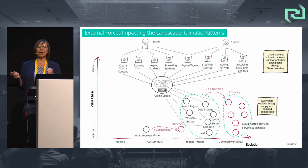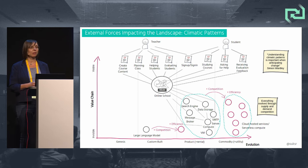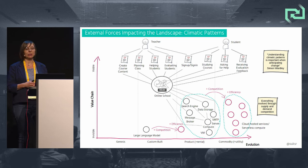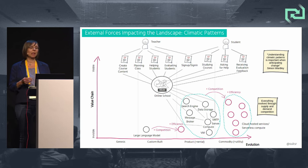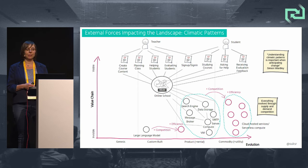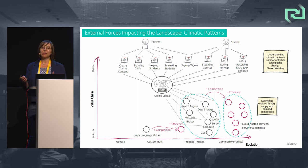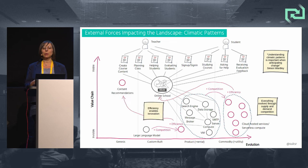One pattern is that the landscape is never static but very dynamic — everything evolves from left to right through the forces of supply, demand, and competition. For example, cloud-hosted services reflect this climatic pattern: what was decades ago non-existent evolved through Genesis and Custom Build, became Product/Rental, and then Commodity/Utility. Similarly, large language models evolved through competition-driven technology advancement and became available as products. The standardization and industrialization of components increases efficiency, bringing us to another climatic pattern: efficiency enables innovation.